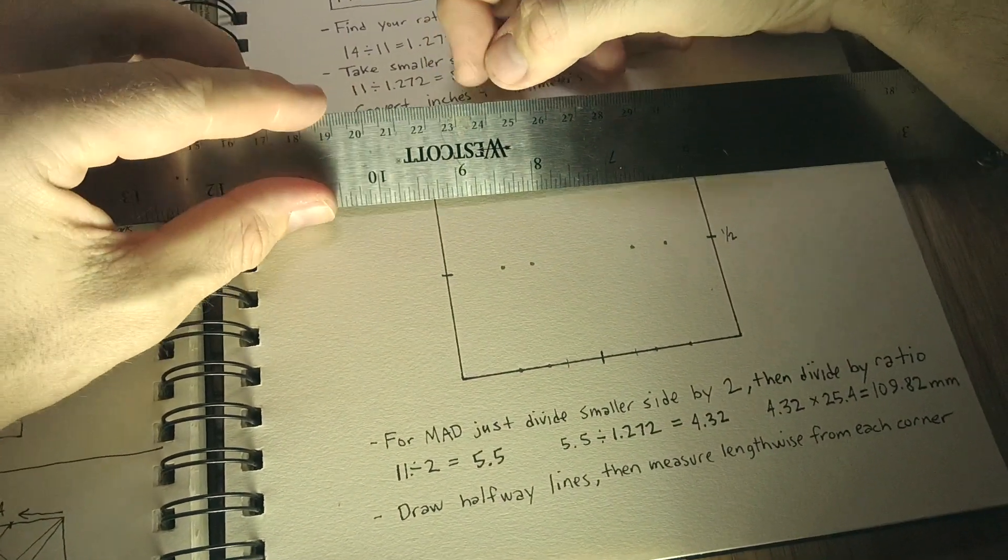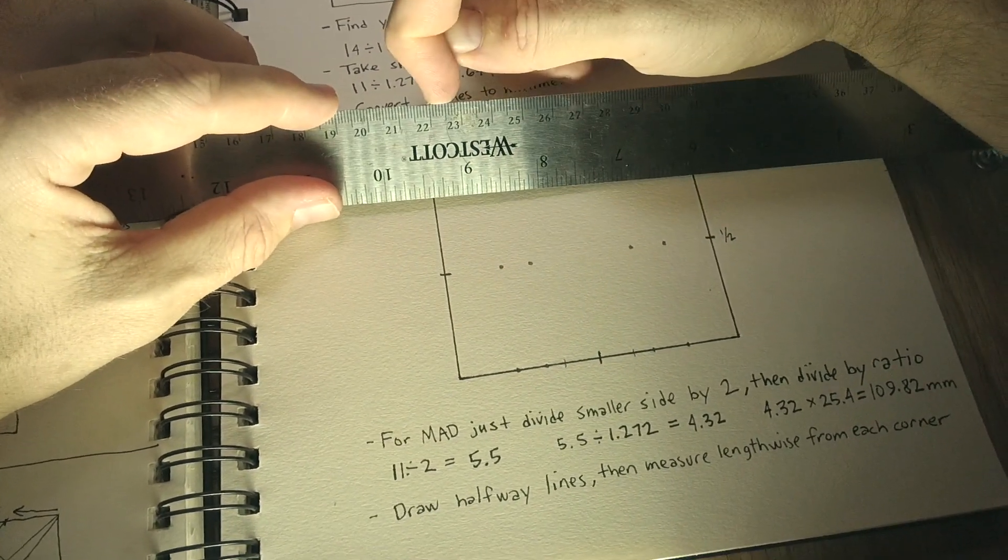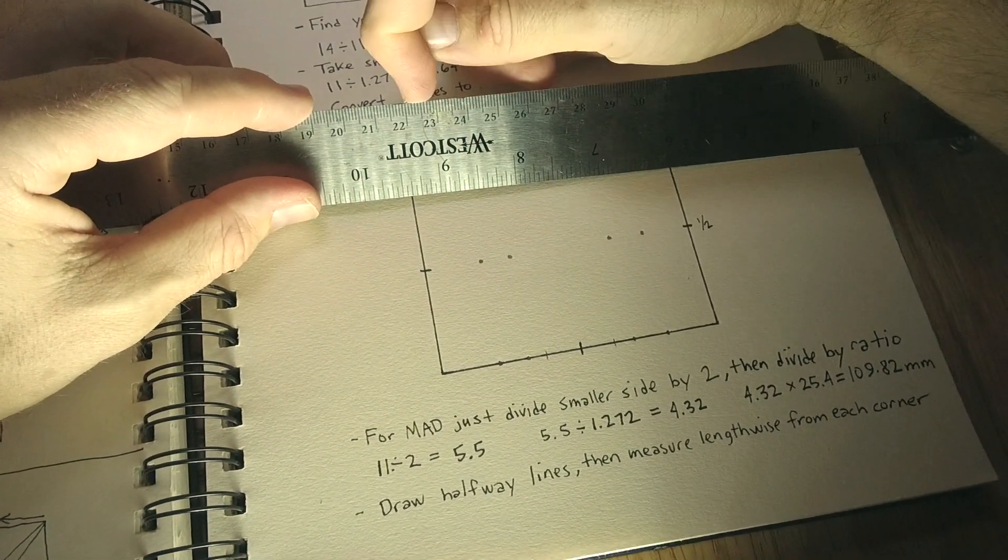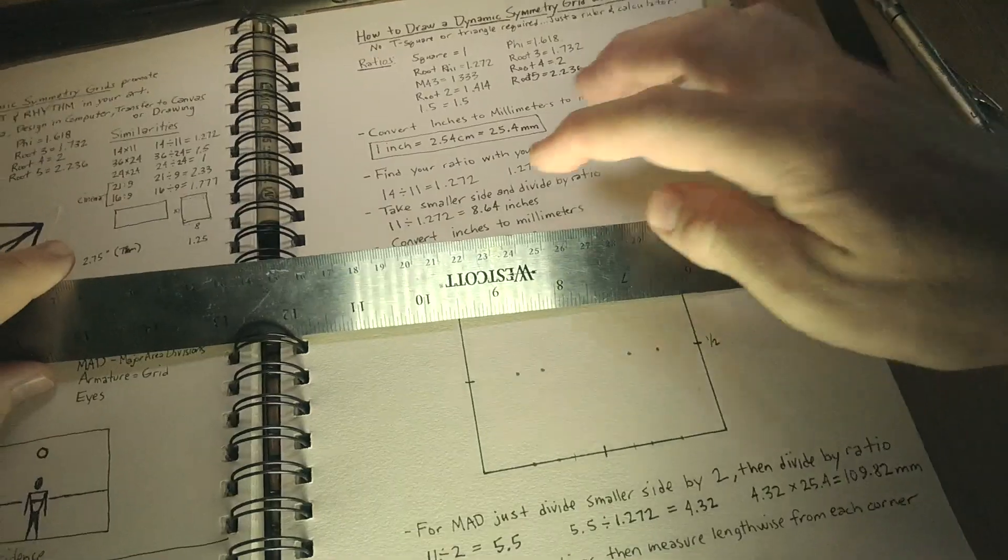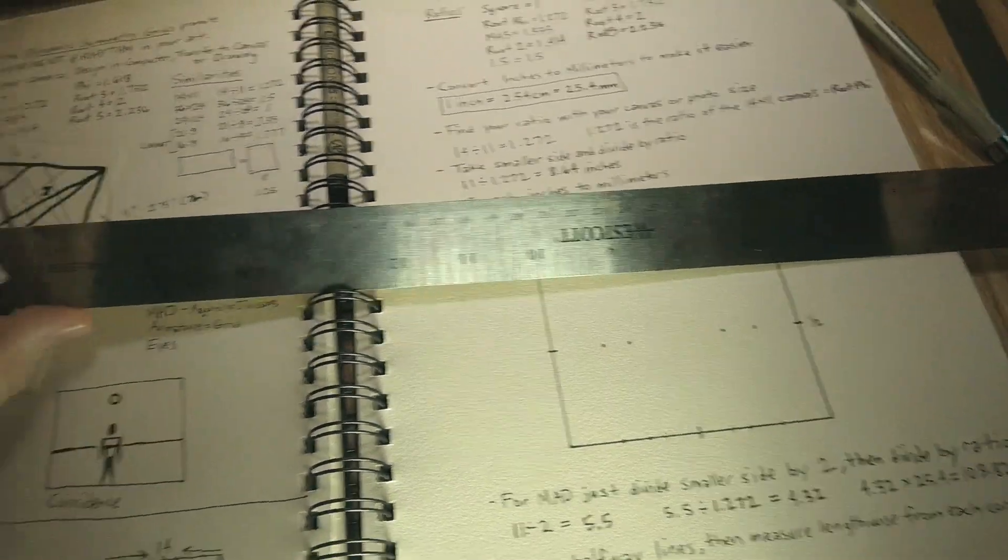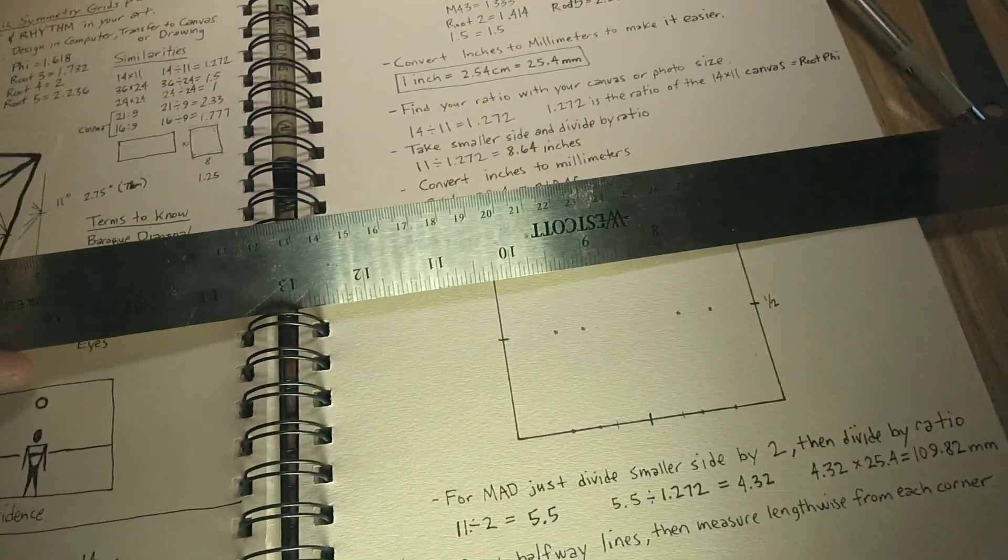And if you want to get really precise, you can just go to the 219 mark and then you go halfway in between that, which at this point, it's not really going to make a difference that little tiny increment. So that's why I use millimeters. It gets us more precise and gets us to where we needed to be a lot quicker.